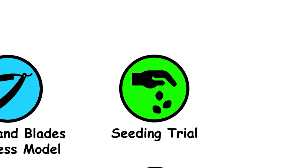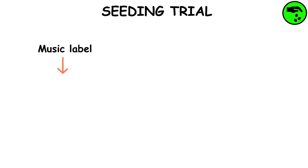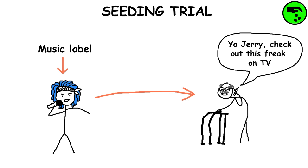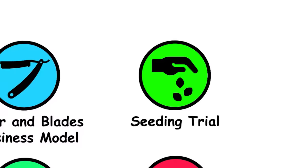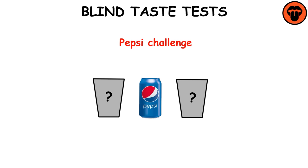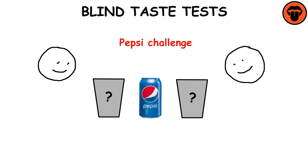Seeding Trial: Allocating marketing to specific customers to stimulate word-of-mouth diffusion. Blind Taste Tests: Companies use blind taste tests, like the Pepsi Challenge, to compare brands, develop new products, and gather customer preferences. These tests help track views, assess product changes, and gauge reactions.